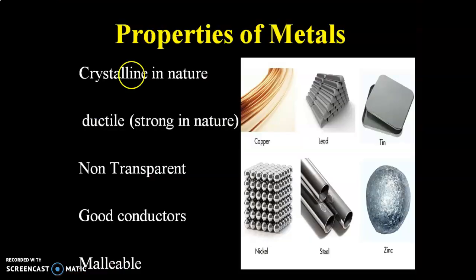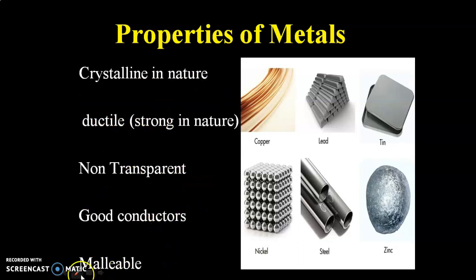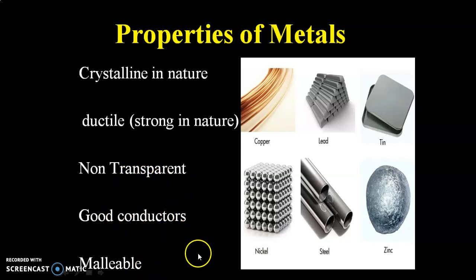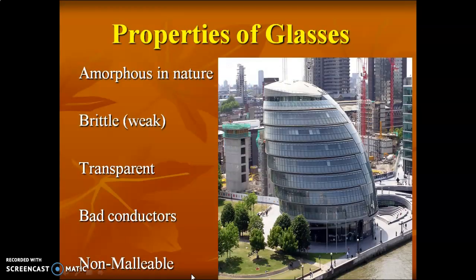The properties of metal will be: crystalline nature, ductile, non-transparent, good conductor, and malleable. Ductile means which can be easily drawn. Non-transparent means you are not able to see the other part through it. Good conductor means it conducts electricity or heat. Malleable means it can be made into a thin sheet.